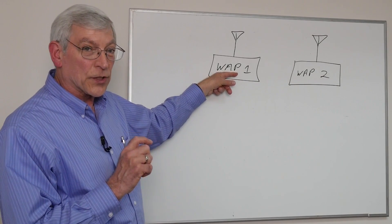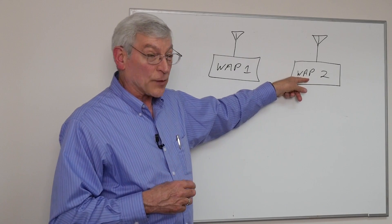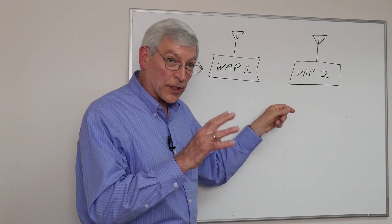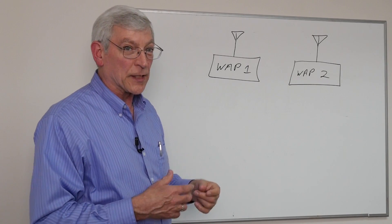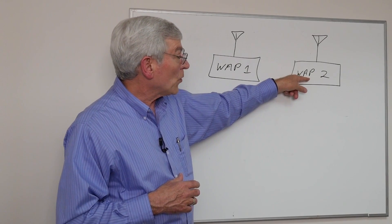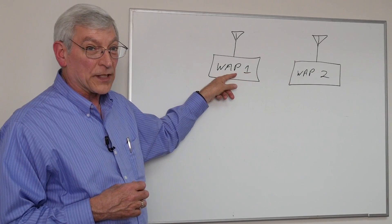So when this access point goes silent, WAP number two, access point number two, will insert a signal that says I'm going to transmit for a while now. So WAP two will transmit and WAP one will be silent.